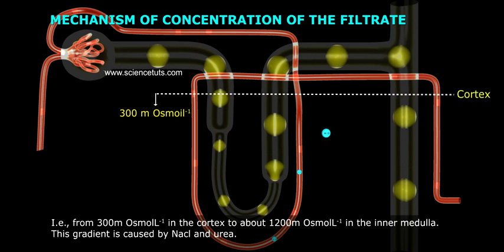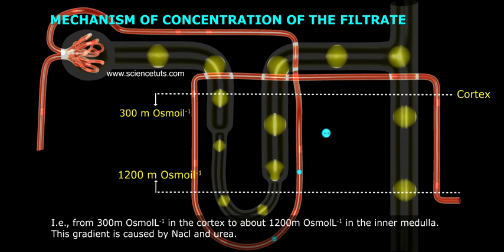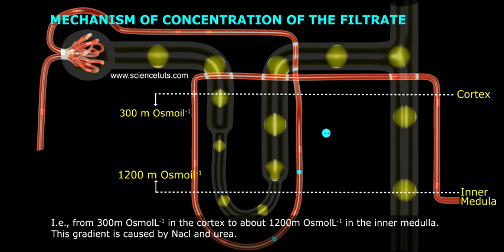From the cortex to about 1200 milliosmoles per liter in the inner medulla. This gradient is caused by NaCl and urea.